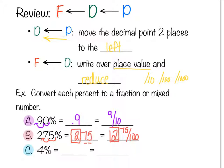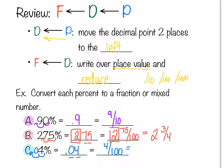We reduce 75/100 — you may remember 0.75 is three-quarters, so this becomes 2 and 3/4. For example C, 4 percent — moving the decimal backwards twice gives 0.04. It has two decimal places so we put it over 100. Dividing by 2 gives 2/50, divide by 2 again gives 1/25. So 4/100 reduces to 1/25.